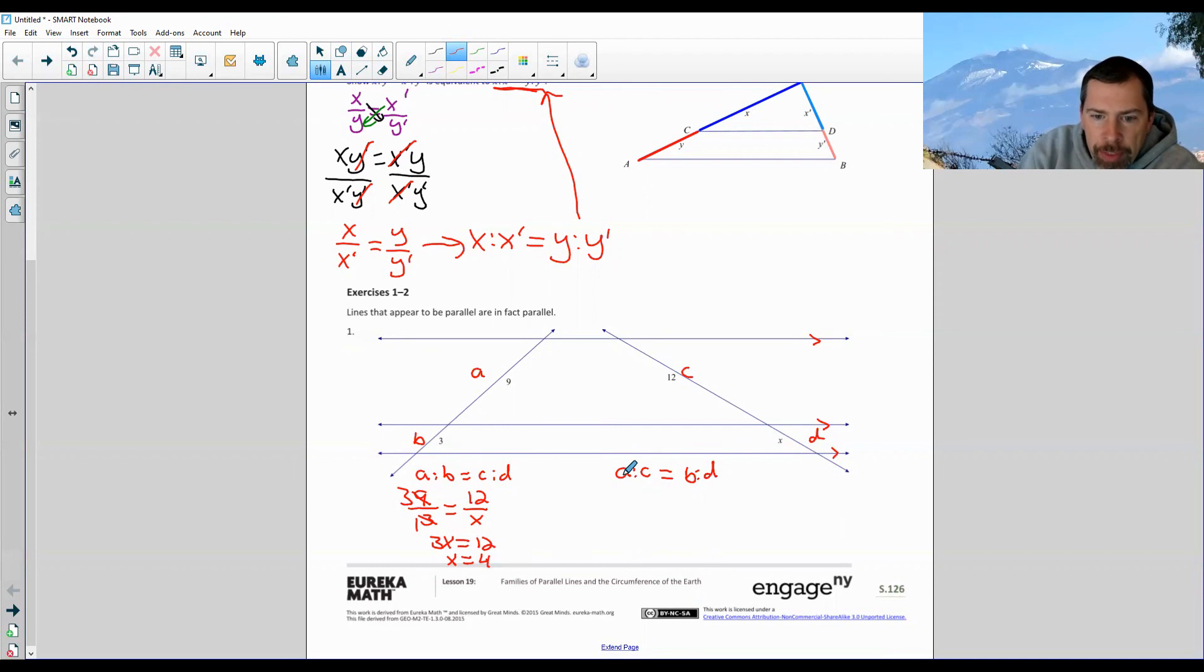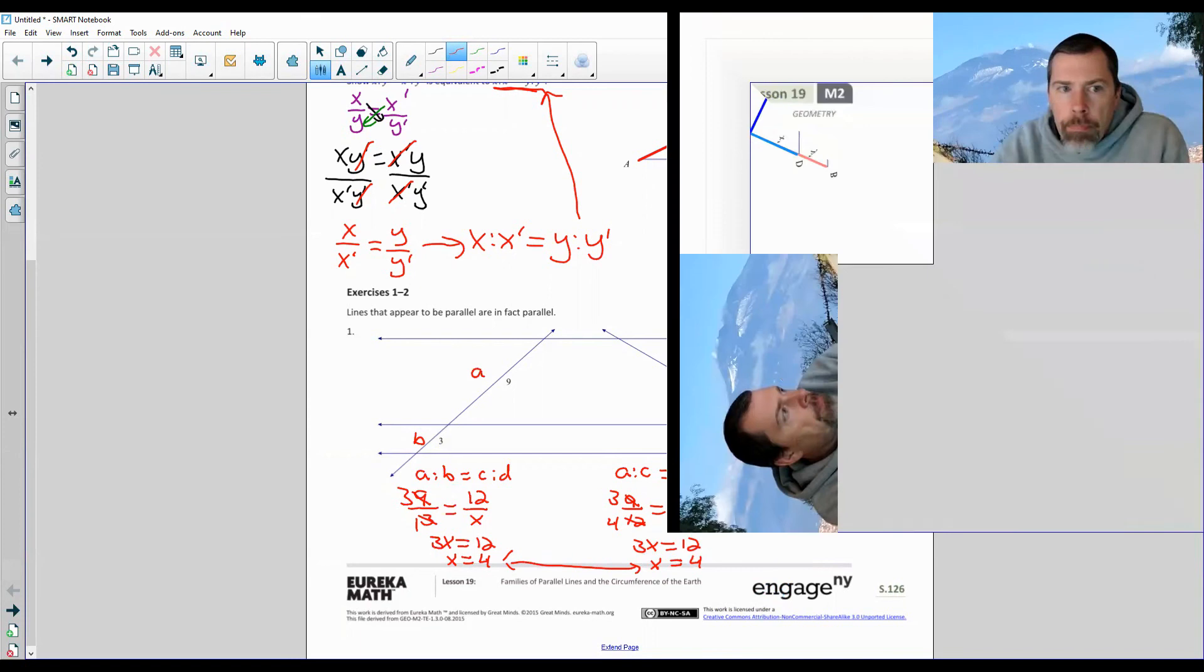Over here, if I do the same, A divided by C is 9 divided by 12 equals B divided by D, 3 divided by x. So notice they're not set up the same. Now we have the numerators that were over here as a fraction and the denominators as the other fraction. And then 9, 3 will go into 9, 3 times. 3 will go into 12, 4 times. And I get 3x equals 4 times 3, which is 12. Divide both sides by 3 and I get x equals 4. So either way, as you can see, we get the same value for x.